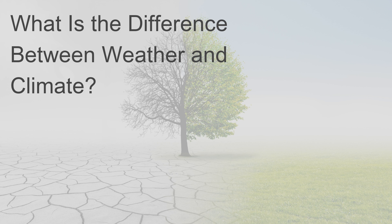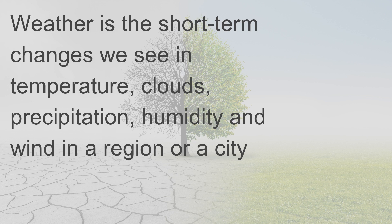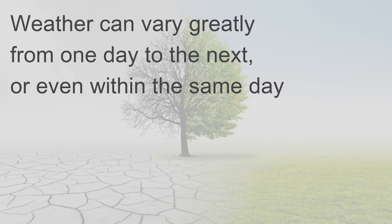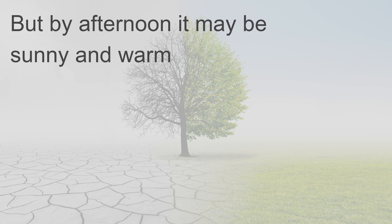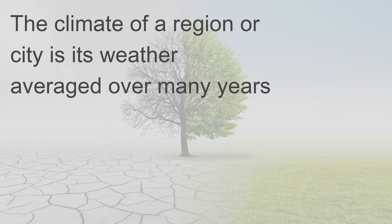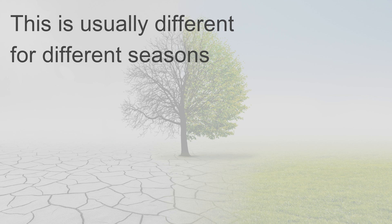What is the difference between weather and climate? Weather is the short-term changes we see in temperature, clouds, precipitation, humidity, and wind in a region or city. Weather can vary greatly from one day to the next or even within the same day — in the morning it may be cloudy and cool, but by afternoon it may be sunny and warm. The climate of a region or city is its weather averaged over many years, usually differing for different seasons.